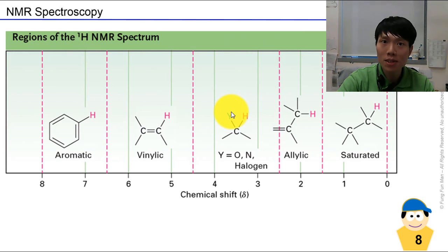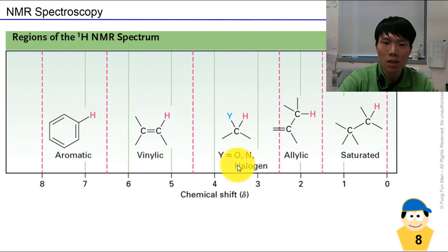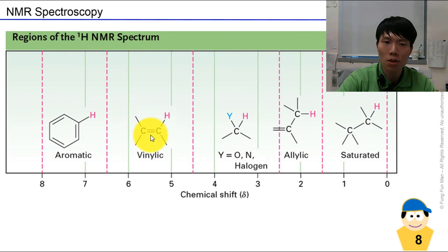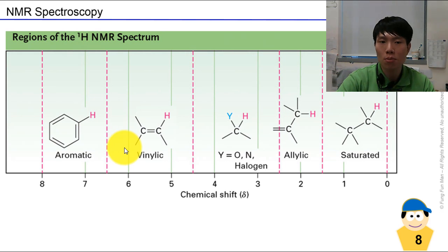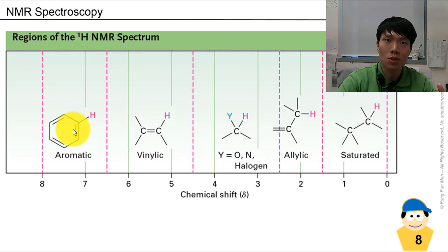From 2.5 to 4.5 ppm, signals here could represent that the surrounding environment has electron-withdrawing elements such as oxygen or nitrogen. The next zone is from 4.5 to 6.5 ppm — this is where your vinylic group appears; again your C=C double bond must be present, and the first position joining to this carbon with a double bond is the vinyl position. The next zone from 6.5 to 8 ppm is for aromatic substances — those with a benzene ring or phenyl groups.